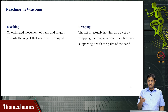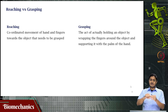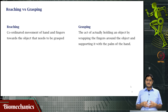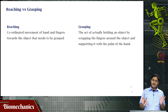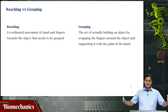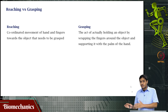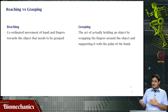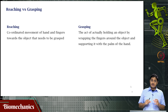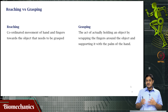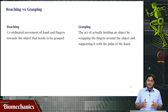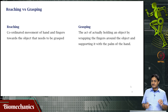Grasping involves wrapping fingers around the object, supporting it with the palm and then performing manipulation activities. Reaching is the act of approaching the object. Almost always reaching is followed by grasping. In biomechanics, there are two broad fields of study — reaching and grasping — with a whole body of literature for each. Reach-to-grasp studies are rather limited because the analysis required is very different and more complicated for each phase.